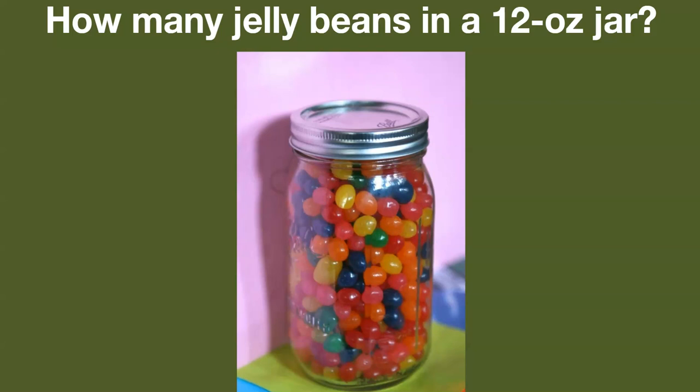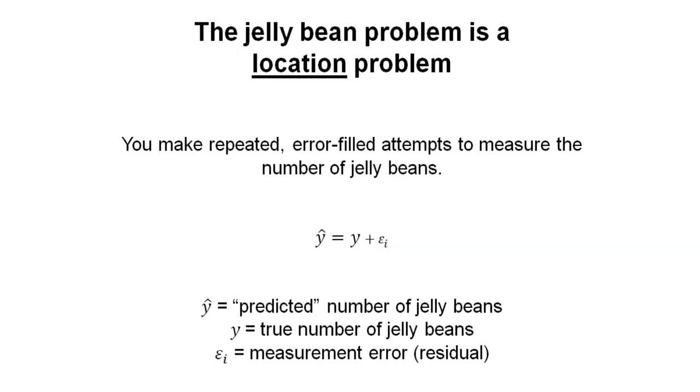First of all, whether they underestimated or overestimated. And second of all, the magnitude. How far away did they answer relative to the true value? We can think of the jelly bean problem as a location problem. That is, these true values and their predicted values get us thinking about the error, or what we'll call the noise, that's inherent to all data sets.